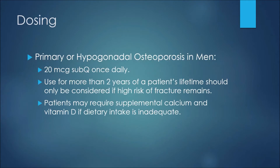For an example of dosing with Teriparatide, in the treatment of primary or hypogonadal osteoporosis in men, we may see a dose of 20 micrograms given subcutaneously once daily. Use for more than two years of a patient's lifetime should only be considered if high risk of fracture remains. Patients may also require supplemental calcium and vitamin D if their dietary intake is inadequate.